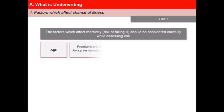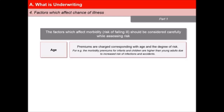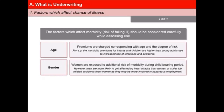1. Age: Premiums are charged corresponding with age and the degree of risk. For example, the morbidity premiums for infants and children are higher than young adults due to increased risk of infections and accidents. 2. Gender: Women are exposed to additional risk of morbidity during childbearing period. However, men are more likely to get affected by heart attacks and job-related accidents than women, as they may be more involved in hazardous employment.